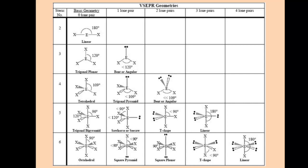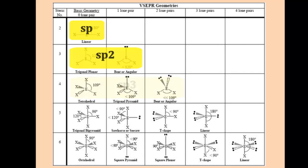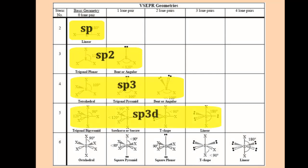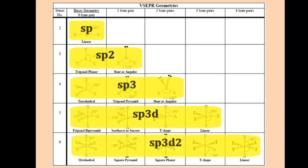Finally, I'd like to correlate the geometry around the central atom to the hybridization which the central atom undergoes. For linear geometry, the hybridization is sp; trigonal planar is sp2; tetrahedral is sp3; trigonal bipyramidal is sp3d; and octahedral is sp3d2. I'll remind you that the lone pairs you see in these geometry figures will reside in a hybrid orbital.